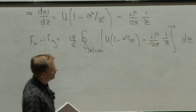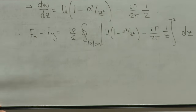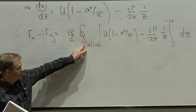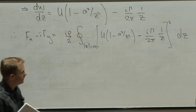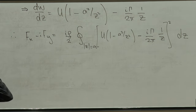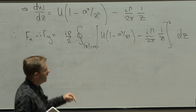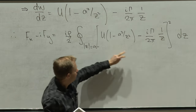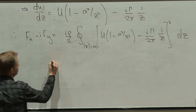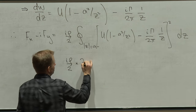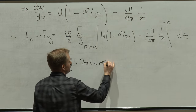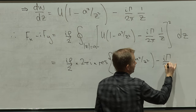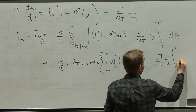Rather than expanding everything out fully, I want to think about where any contribution to this integral will come from. The only singularities are at z = 0. The residue is the coefficient of 1/z. When I expand the square, I get a 1/z term from multiplying the 1/z term by the constant term 1. So this is i·rho/2 times 2·pi·i times the residue of [U(1 minus a²/z²) minus i·gamma/(2·pi)·(1/z)]² evaluated at z = 0.